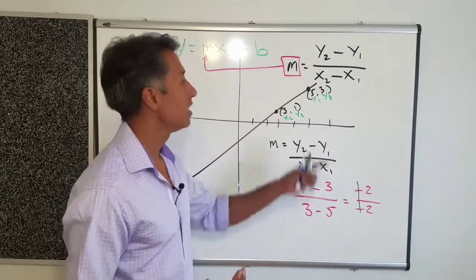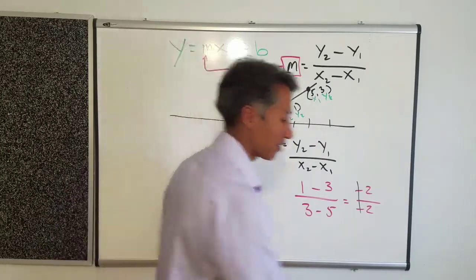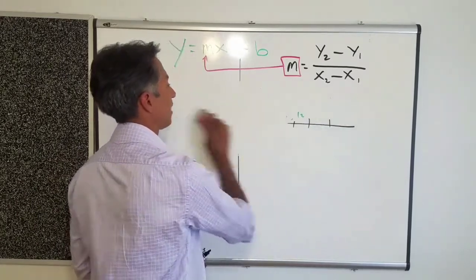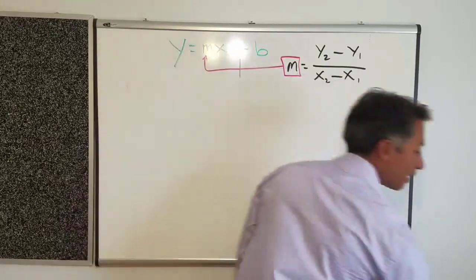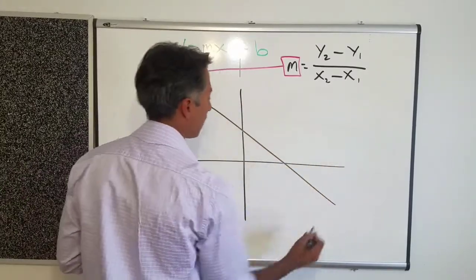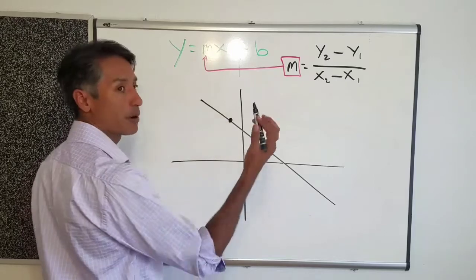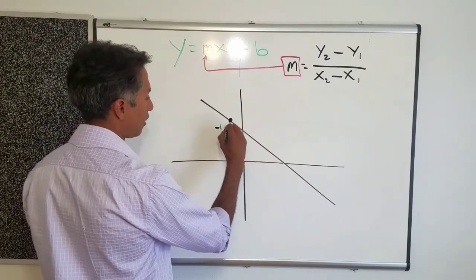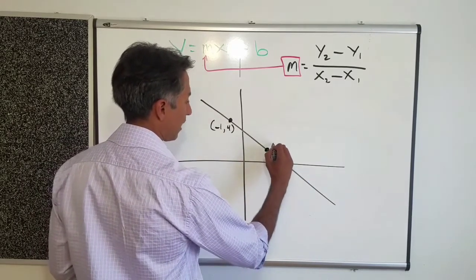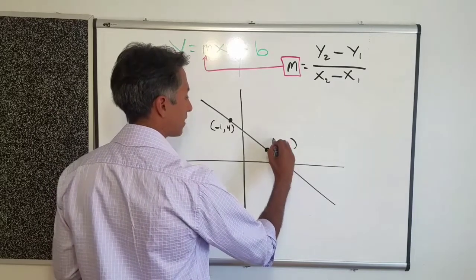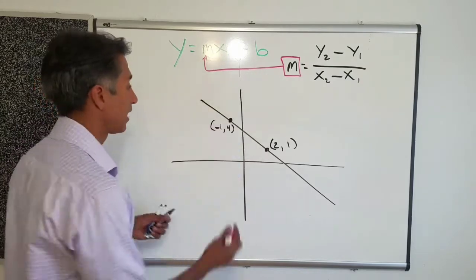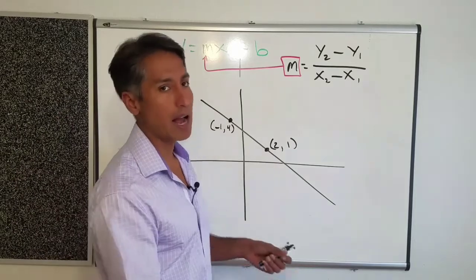Let's go through one more problem. If you feel like you already understand this, stop watching and get back to your work. But if you want to see one more, let's make one up. I'll go with a negative — how about negative 1, 4 — and I'll pick another point over here, how about 2, 1. I'm just making these up.